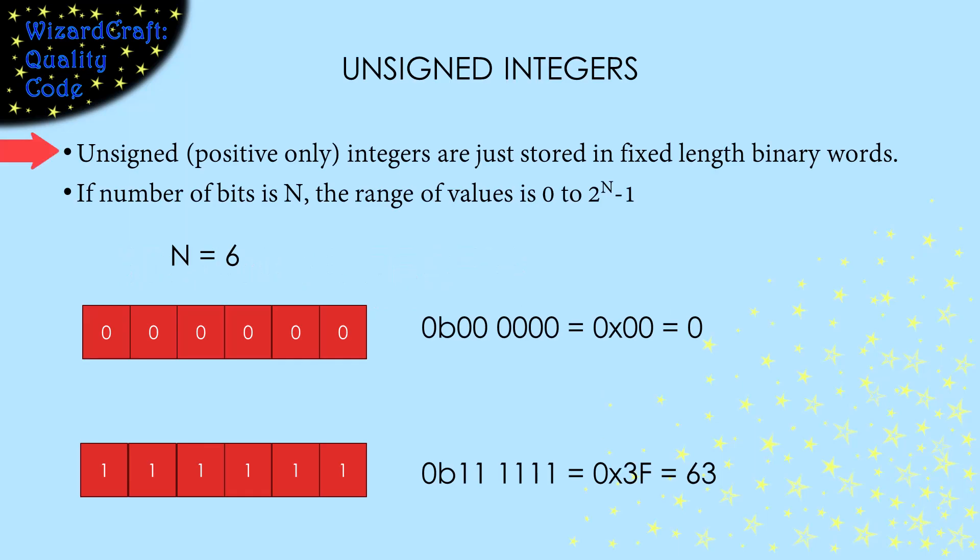Storing unsigned integers is easy. They're just stored as fixed length binary words. This means that there's a set number of bits we use, and each bit is a zero or a one. Since the numbers we're storing are unsigned, they are all positive, and the range of numbers that we can store is 0 to 2 to the n minus 1, where n is the number of bits we're using.